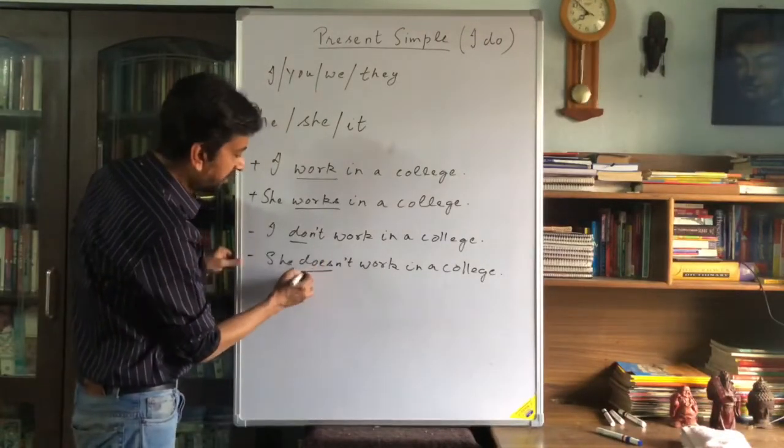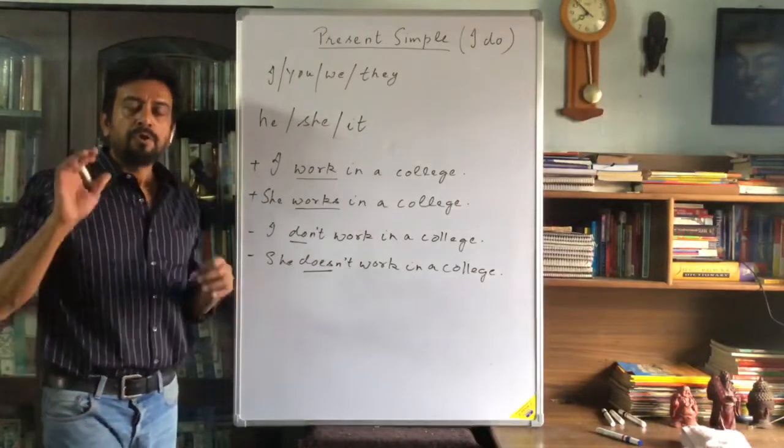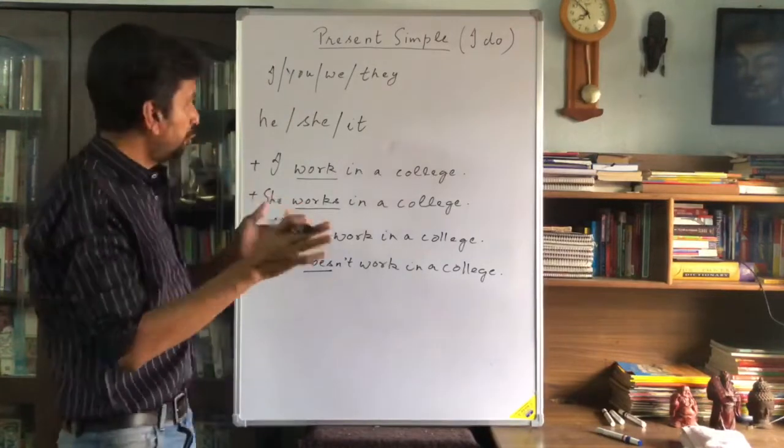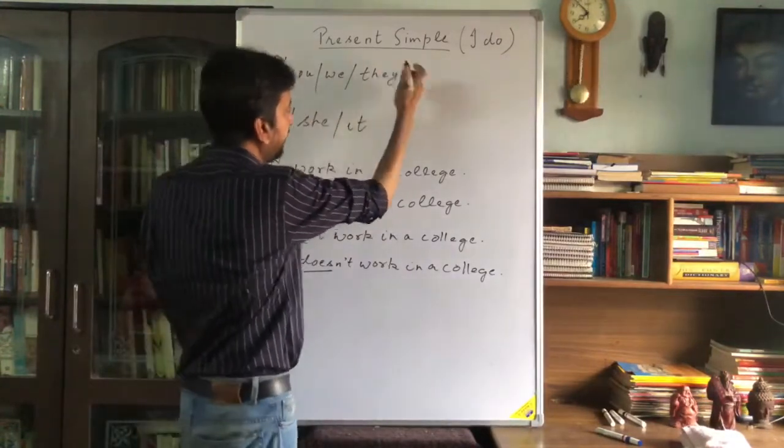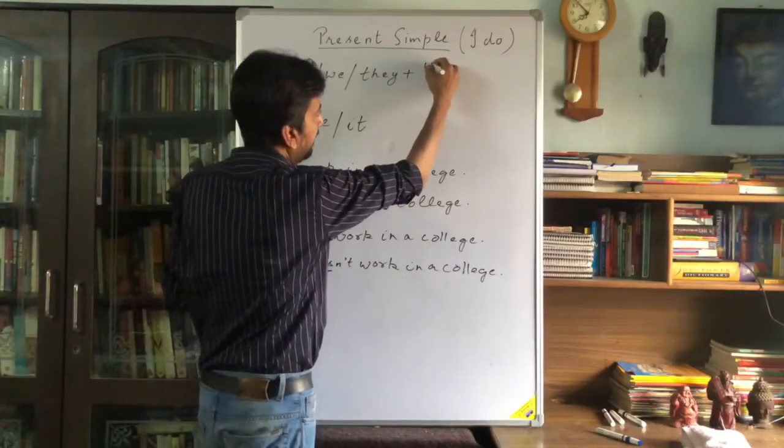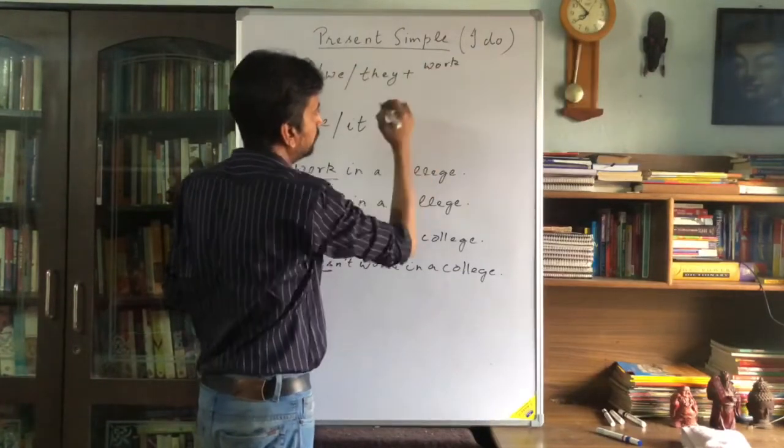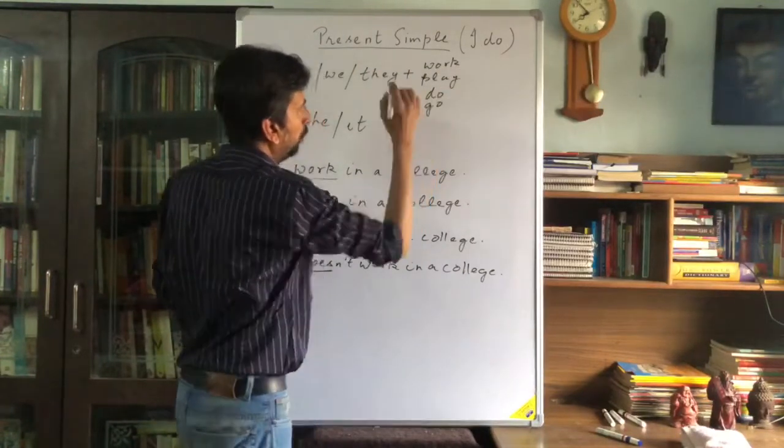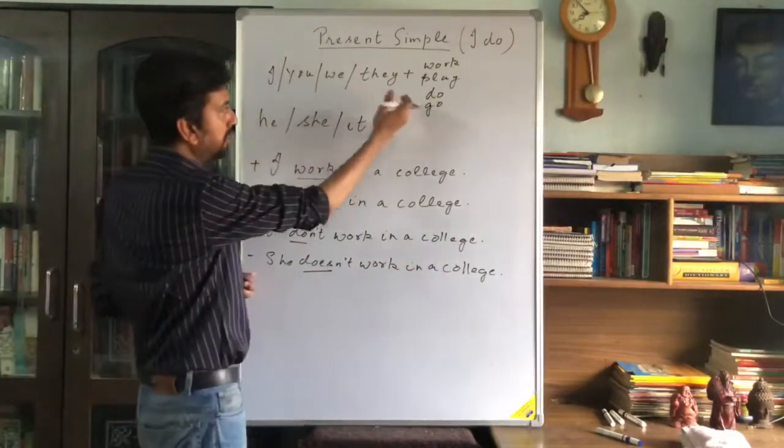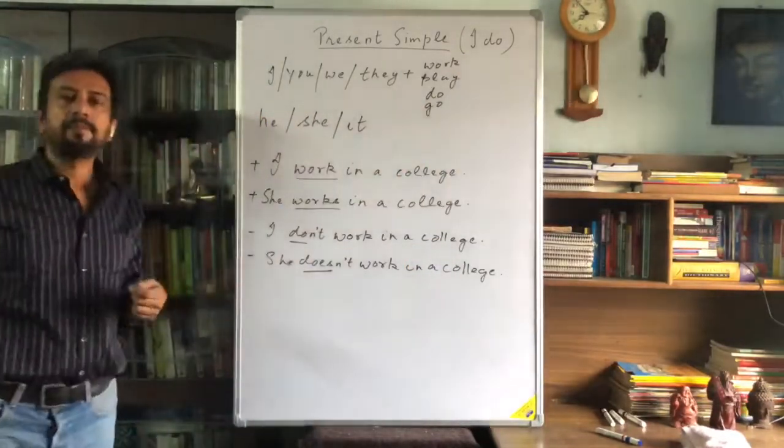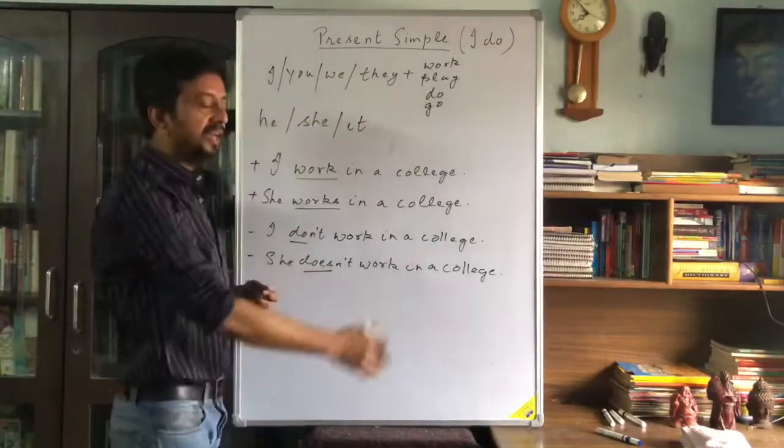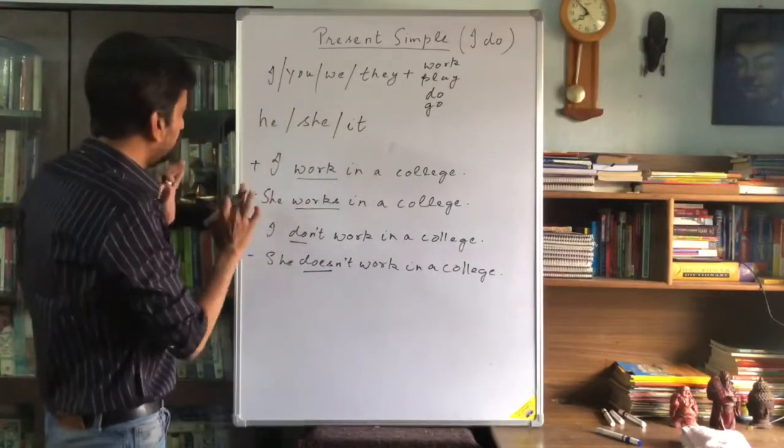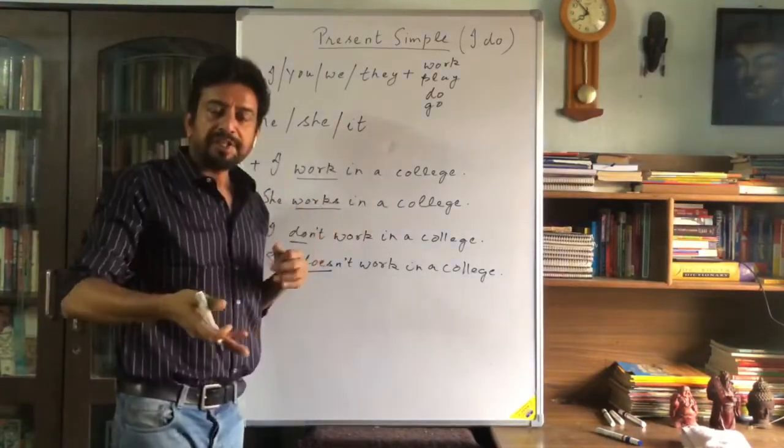If your subject is I, you, we, and they, then your verb would be like work, play, do, go, right? You say they go to the office, you say we play cricket, right? But if your verb is associated with the subjects, the subjects like he, she, or it, then you would say works...